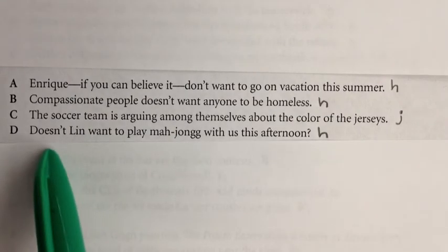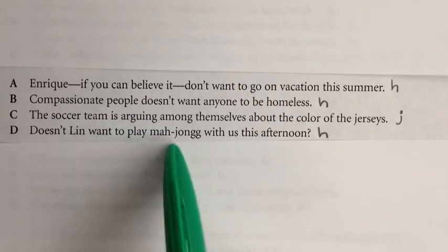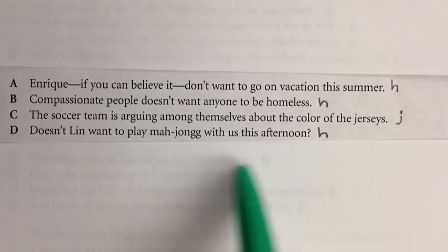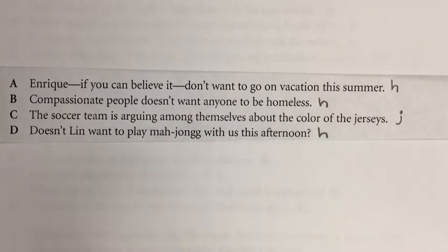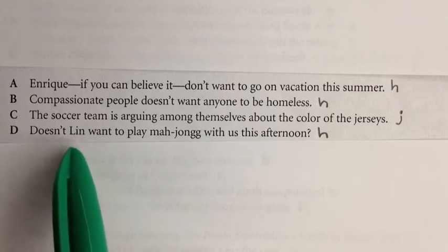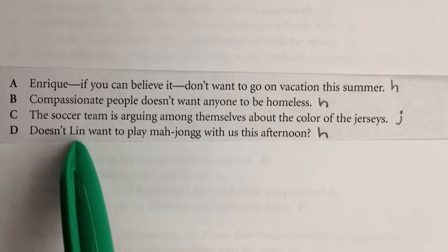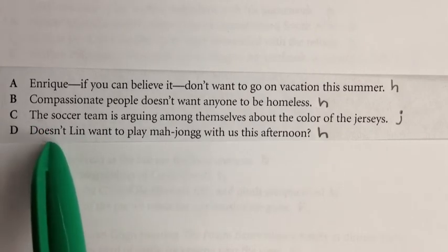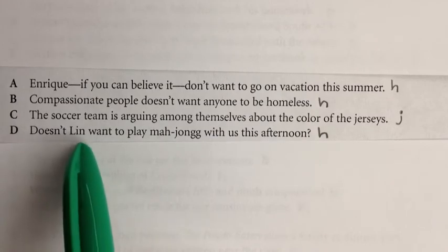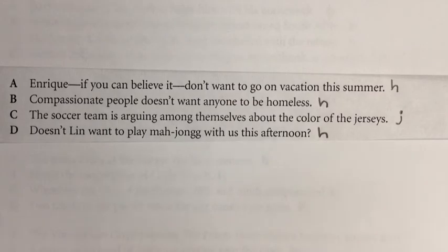Sentence D: 'Doesn't Lin want to play Mahjong with us this afternoon?' This is a question, so be suspicious. The subject is Lin, which is singular. We want a verb that ends in S. 'Doesn't' is a contraction for 'does not,' and 'does' ends in S — so 'doesn't' is the contraction we want for our singular subject Lin. The answer here is D.